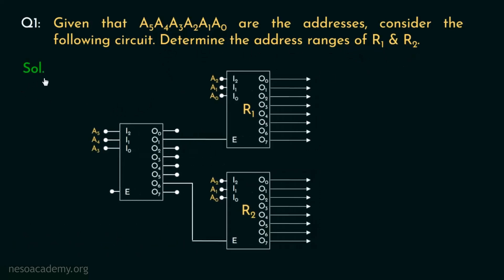Now let's try to solve it. Well, if you observe, we have 6 address bits. Looking at the circuit, the least significant 3 bits, A2, A1 and A0, are given as inputs to R1 and R2. Since we have 3 input bits, R1 is gonna cover 2 cubed, that is 8 addresses, and so is R2.